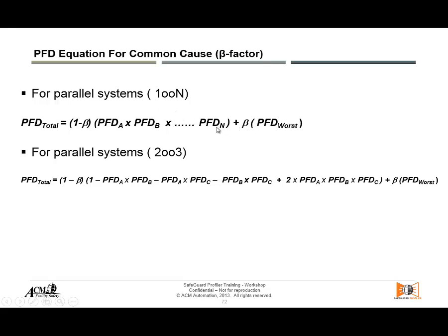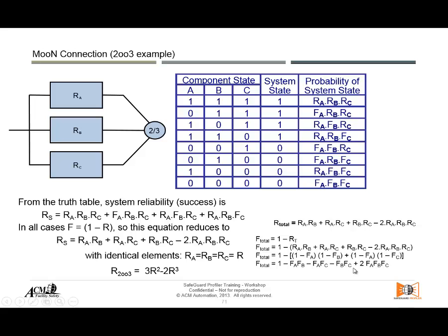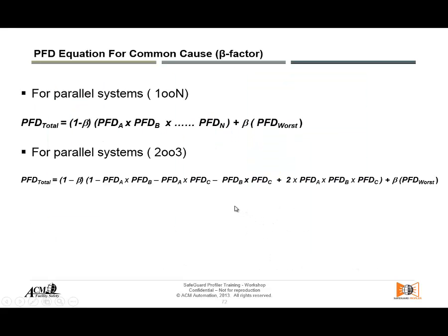When you have different technologies — for example a switch and a transmitter — each has its own PFD. You pick the worst one for the common cause term: (1 − β) × PFD_switch × PFD_transmitter + β × PFD_switch. This is the formula for a parallel system including the beta factor. Using these rules of reliability block diagrams, we can calculate any architecture simply by knowing each component's individual PFD.